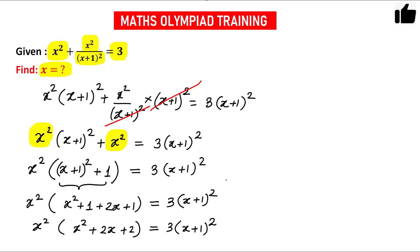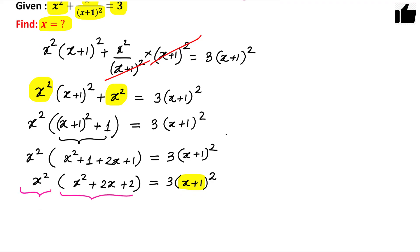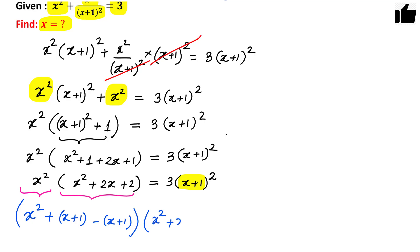Now we will use a trick. On the right side we have the term (x+1), so we will introduce (x+1) into both terms on the left. In the first term, I will write x squared and add (x+1) then subtract (x+1). In the second term, I write x squared plus x plus x plus x plus 1 plus 1, writing 2x as x plus x and 2 as 1 plus 1.